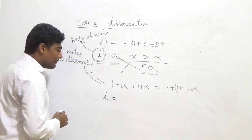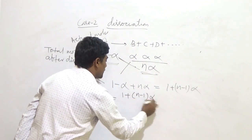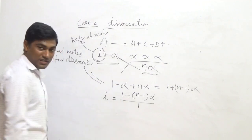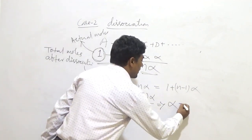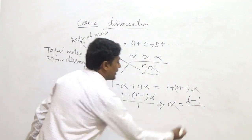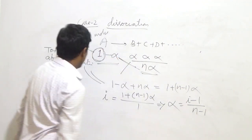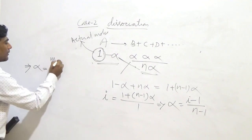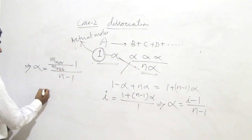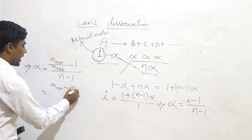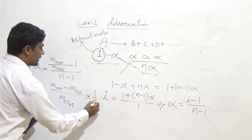The Van't Hoff factor equals total number of moles after dissociation, which is one plus n minus one times alpha, divided by one. Rearranging, alpha equals i minus one divided by n minus one. Since i equals M normal divided by M observed, substituting gives alpha equals M normal divided by M observed minus one, all divided by n minus one. Simplifying, alpha equals M normal minus M observed divided by M observed, times one divided by n minus one.